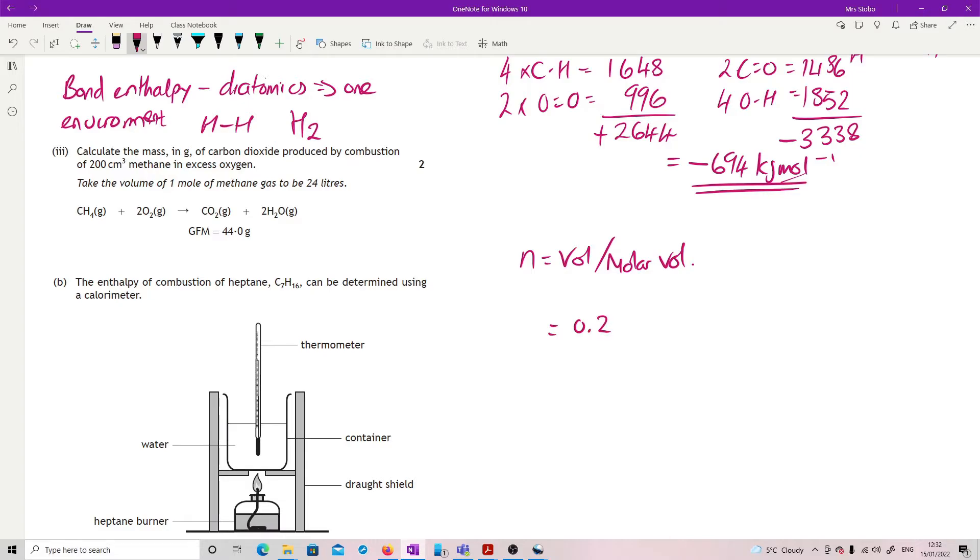Our volume is 0.2 of methane divided by the molar volume, which is 24, 0.008. So that's how many moles of methane I have. And that's a one-to-one for carbon dioxide. So that's pretty straightforward. I've got 0.008 carbon dioxide. Moles, sorry, mass is moles divided by, say it the other way around. Moles is mass divided by formula mass, so therefore, mass is moles times formula mass. So 0.008 times 44 is 0.37 grams.